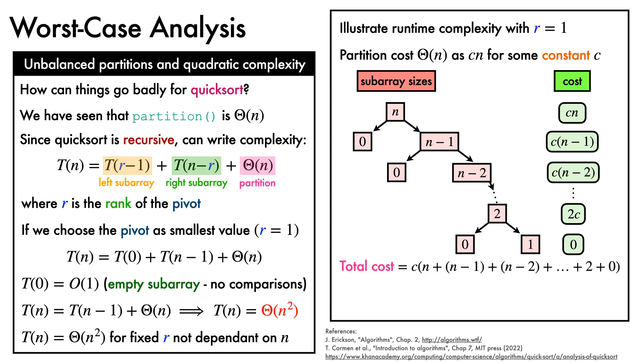The terms on the right are summed together to get the total cost, which takes the form of an arithmetic series. We can write this more simply in terms of n and n plus 1, from which we can see that the cost is indeed quadratic.